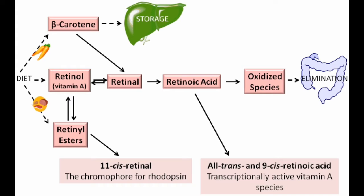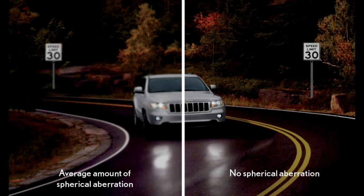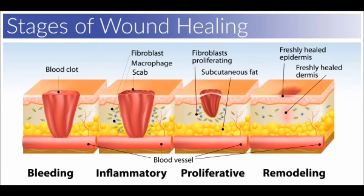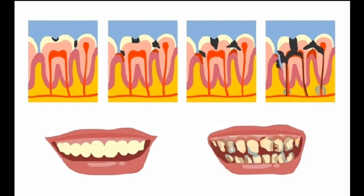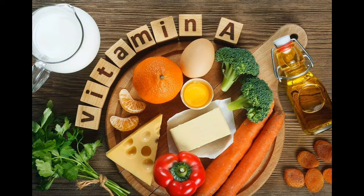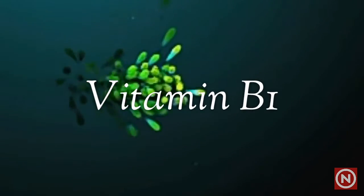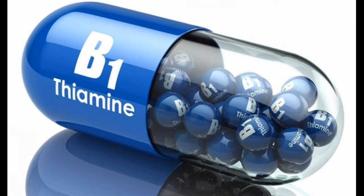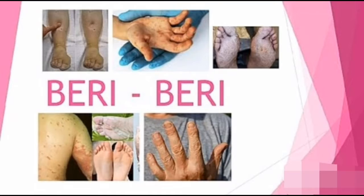Vitamin A: constituent — retinol, retinoic acid, beta-carotene. Deficiency disease — night blindness, poor healing of epithelial cells, abnormal development of teeth and bones. Sources — carrots, papaya, milk, cheese, fish liver oil, green vegetables, etc.